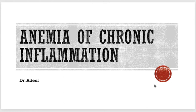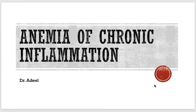Good morning everyone. Today we are going to talk about the leftover remaining topics of microcytic anemia. In microcytic anemia, remember two very important topics: iron deficiency anemia, which is the most important and most common anemia overall. Whenever a patient comes with anemia, we check their MCV — if it is low, it is microcytic and hypochromic, with low MCH, so we start thinking about iron deficiency anemia.